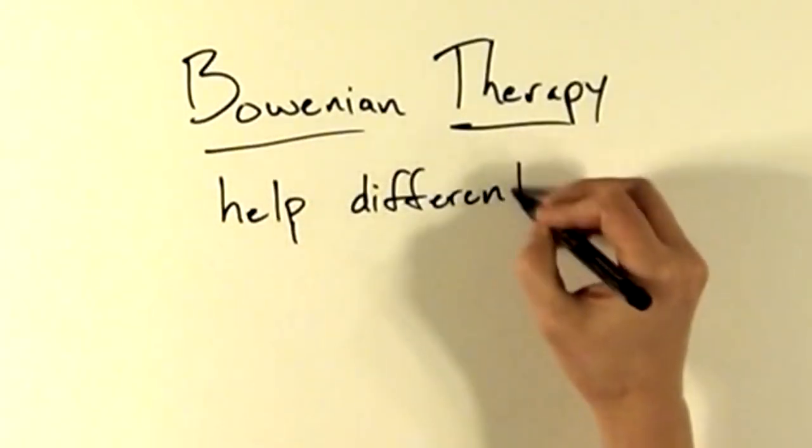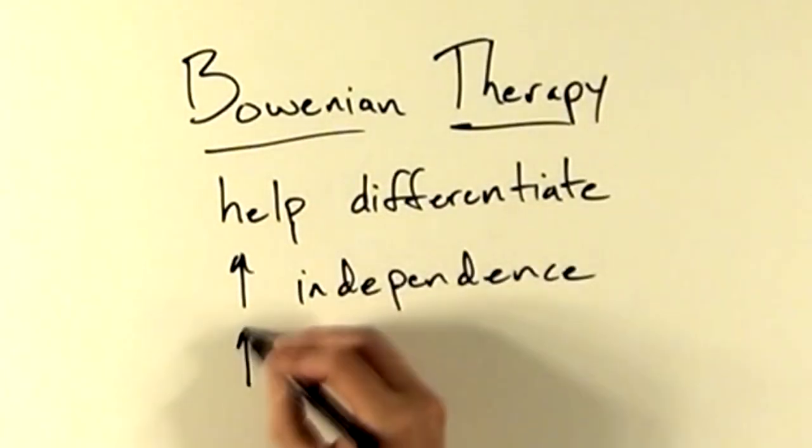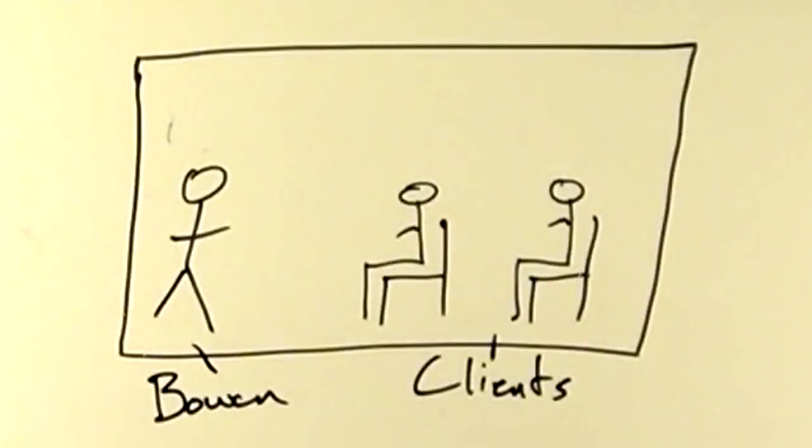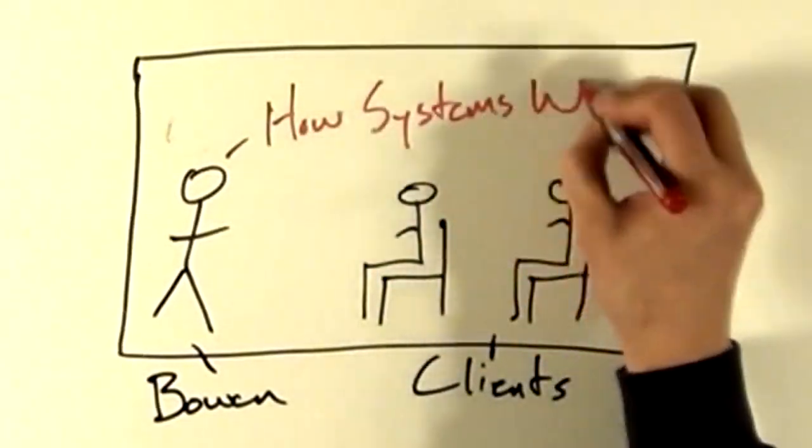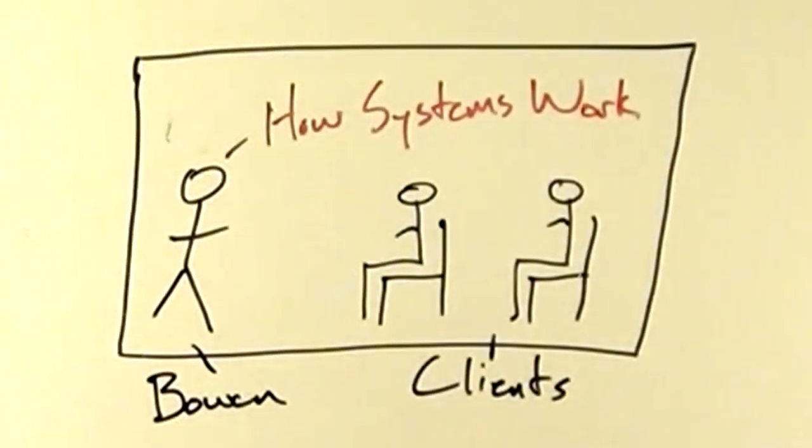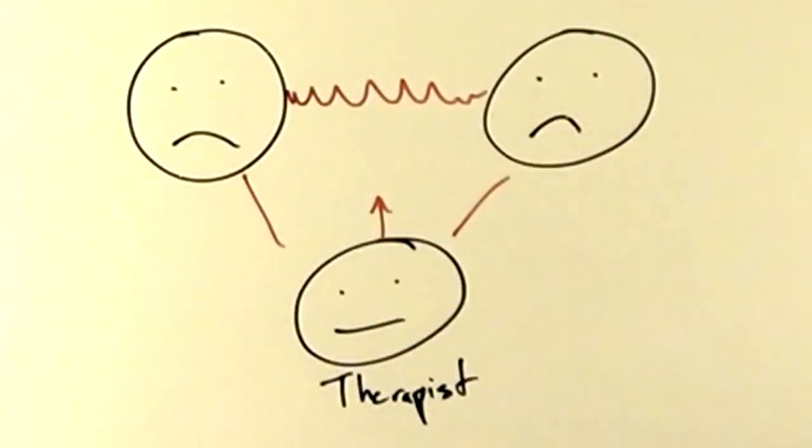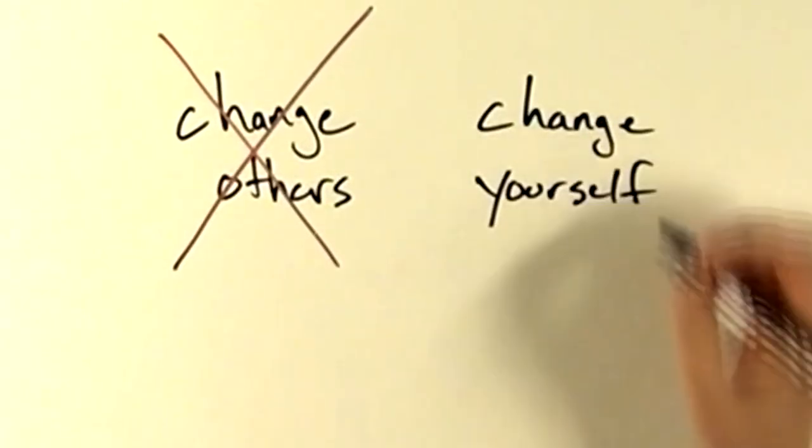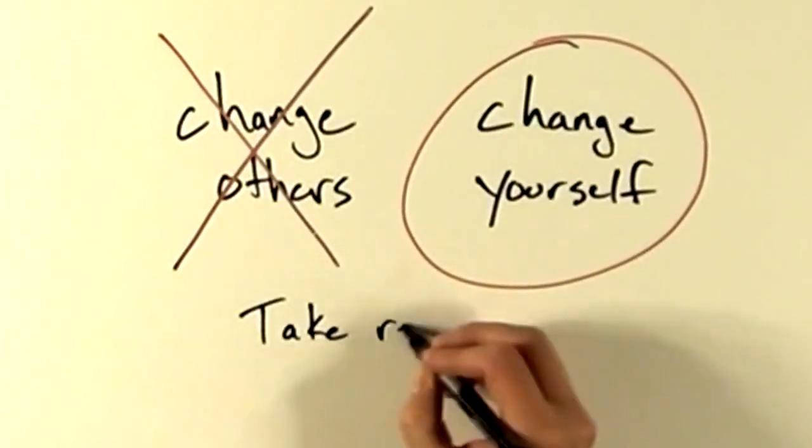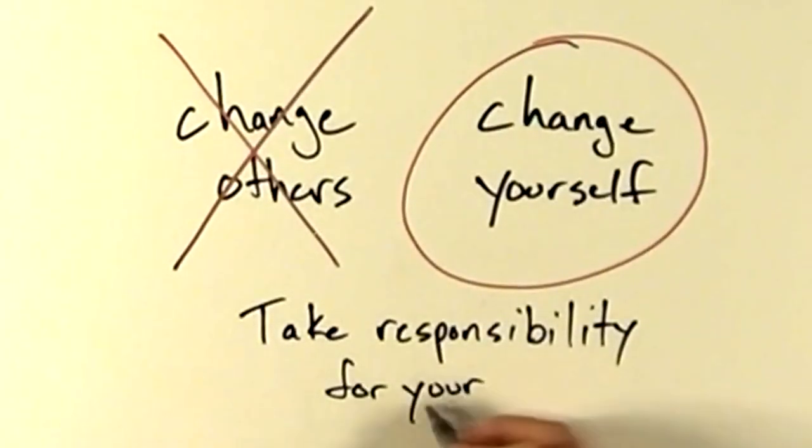Bowenian therapists like to help people individuate, to become more independent, and to be more self-soothing. Bowenian therapists teach their clients about how family systems work, so clients have a better understanding of how their own family operates. Bowenian therapists try to help people communicate their needs in a more differentiated manner. They try to help people to shift from trying to change others to trying to change themselves.